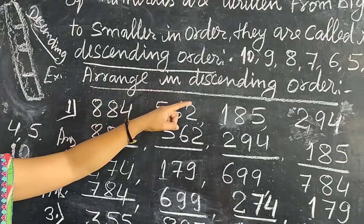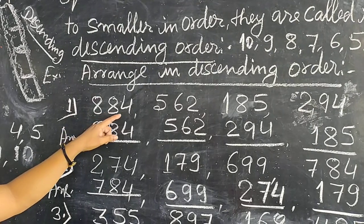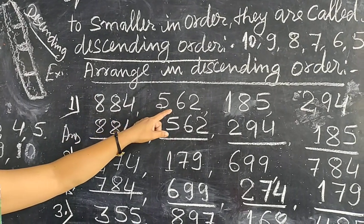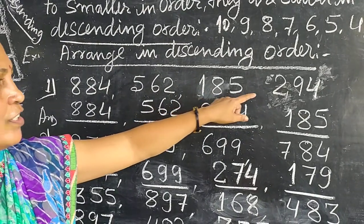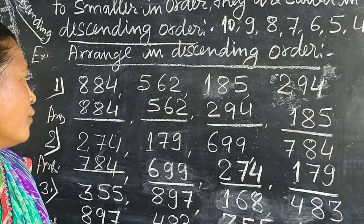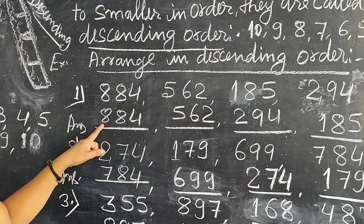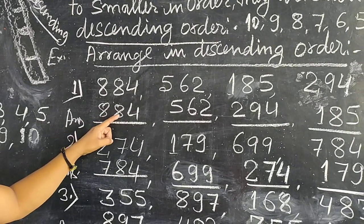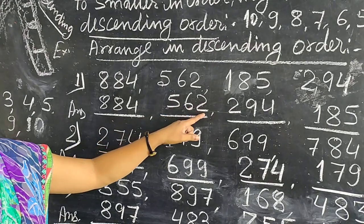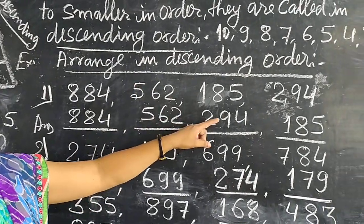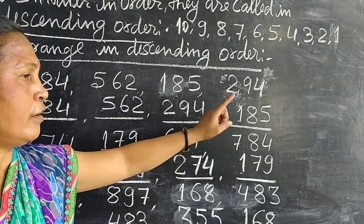Example: arrange in descending order. Number 1: 884, 562, 185, and 294. We find the bigger number. The biggest is 884, second is 562, then 294 and 185. So this is descending order.